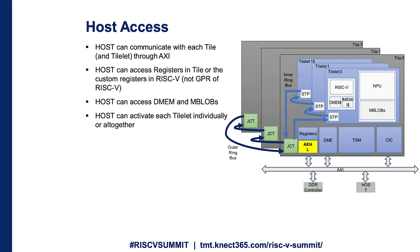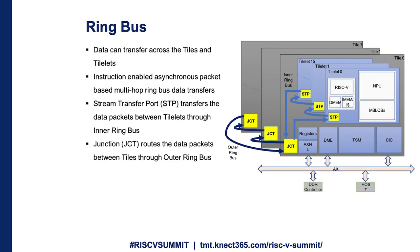For the host to access the tilelets, an AXI-Lite slave interface is provided. The host can access most of the registers and memories inside the LNE, and can activate tilelets individually or all at once. The ring bus enables data sharing between tilelets — there are two ring buses: the inner ring bus, handled by the stream port, and the outer ring bus, handled by the junction block.